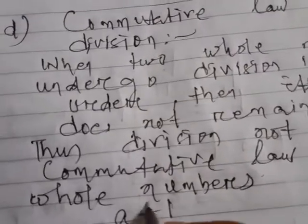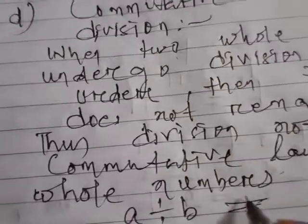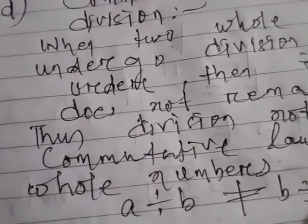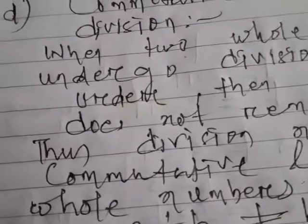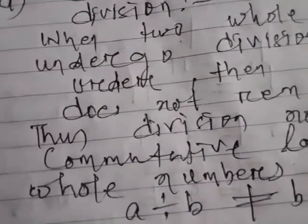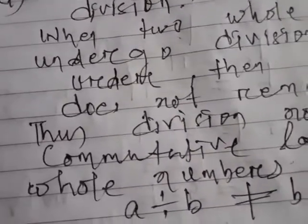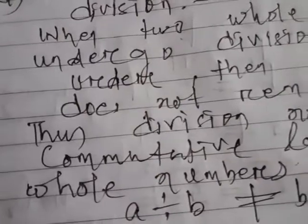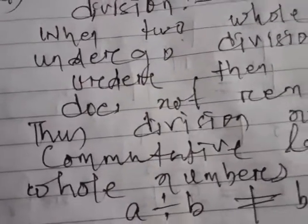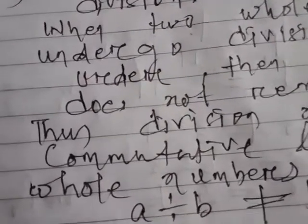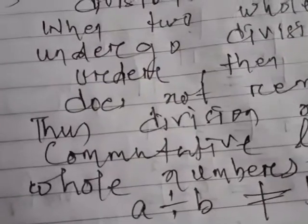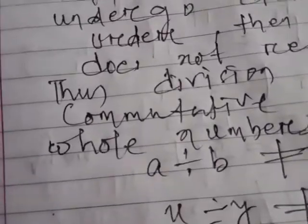It means a divided by b is not equal to b divided by a. X divided by y is not equal to y divided by x. M divided by n is not equal to n divided by m.